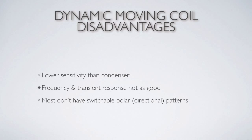Regarding transient response — transient means momentary. When we have signals with very short durations, like pulse-like signals with quick amplitude changes, that's a transient. These exist in musical signals — percussive instruments like a triangle or snare drum have quick transients, where the amplitude changes from nothing to something really quickly. The moving coil can't move quickly because it has a lot of mass. Sometimes that slow transient response is a sound we like, though. Microphones are not always chosen for the most accurate representation of the sound, but one we prefer — they can have a euphonic quality that supersedes accuracy.